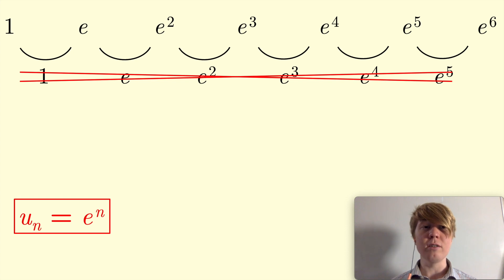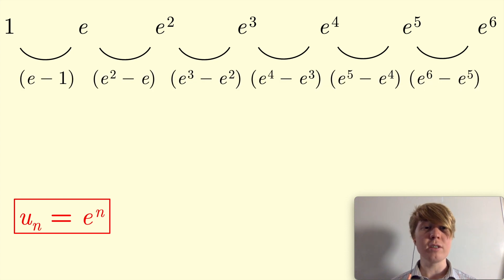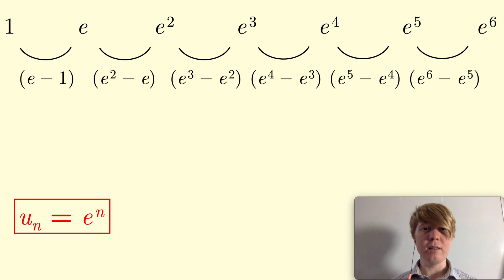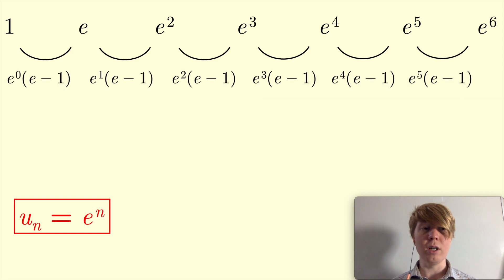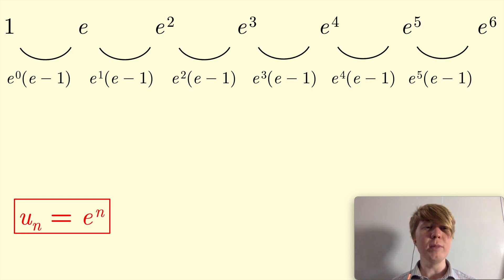So if you wanted to calculate these, you can do: it's e minus 1 for your first term, and then e squared minus e for the difference between your third and second term, e cubed minus e squared for the next difference, and so on. There's quite a nice pattern here — if you factorise this, you can see they've all got a common factor of e minus 1. So this looks an awful lot like the original sequence, just multiplied by these e minus 1 terms, which is no good.